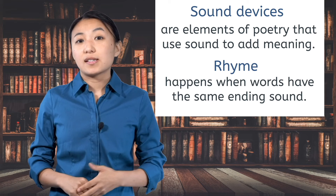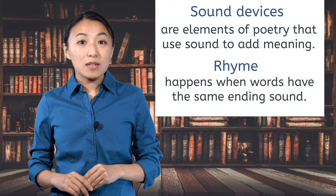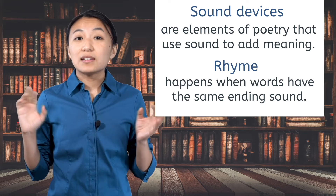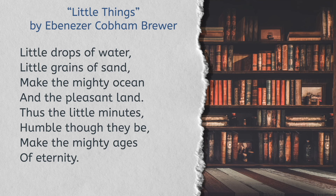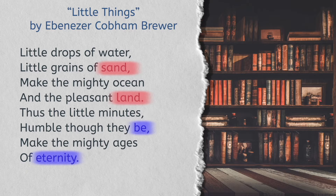Next is the category of sound devices. Poems are meant to be read out loud. Sound devices are elements of poetry that use sound to add meaning. The rhyme scheme of a poem affects the sound. Rhyme happens when words have the same ending sound. Poems don't have to rhyme at all, but when they do, the poet chooses the rhyme scheme they want to use — like every line or every other. In 'Little Things' by Ebenezer Cobham Brewer, 'sand' rhymes with 'land,' and 'be' rhymes with 'eternity.' The other lines don't rhyme at all.